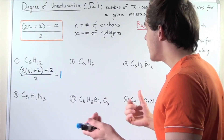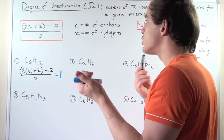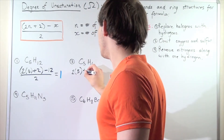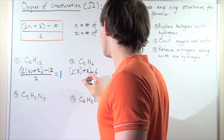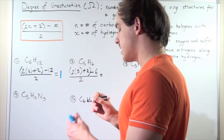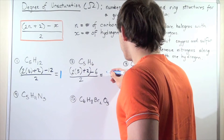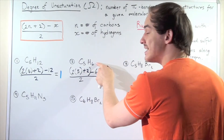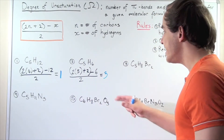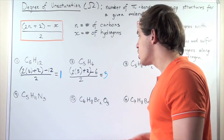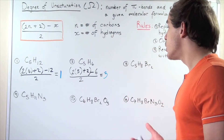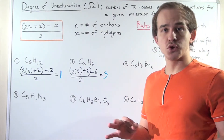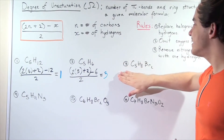In example two, we have five carbons so n = 5, and six hydrogen atoms so x = 6. Applying the formula: (2×5 + 2 - 6) / 2 = (12 - 6) / 2 = 6 / 2 = 3. So we have 3 degrees of unsaturation, meaning we can have 3 pi bonds, or 2 pi bonds and 1 ring structure, or 2 ring structures and 1 pi bond, or 3 ring structures and 0 pi bonds.